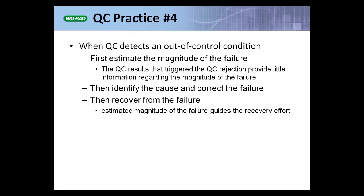There are many ways to estimate magnitude. An obvious easy way would be to run additional replicates of quality control material and take the mean difference between what you're getting in the replicates and the target value. Once you've estimated the magnitude, go ahead and identify the cause and correct the failure — and because you've estimated the magnitude, your approach to recovery is better informed and more cost-effective.